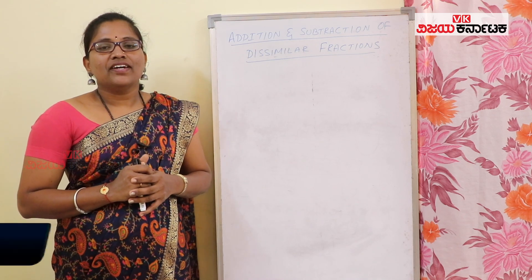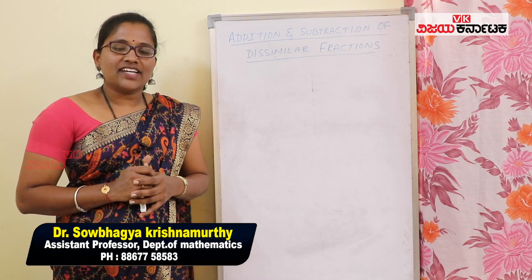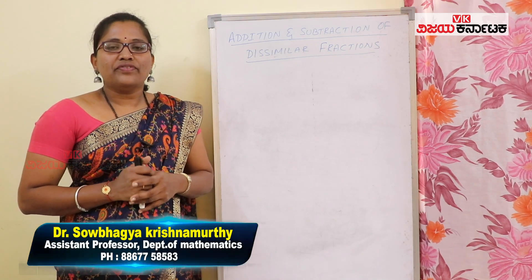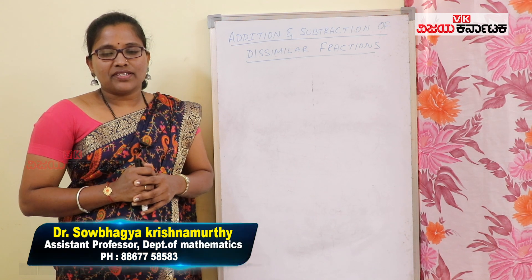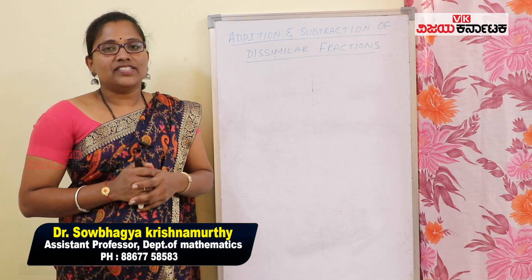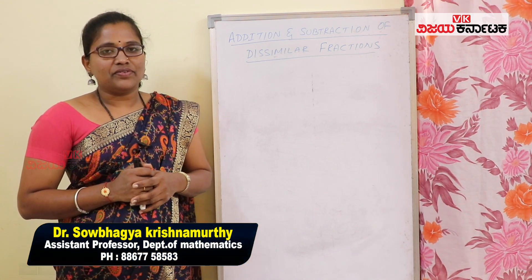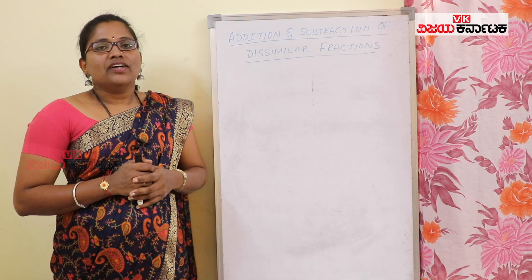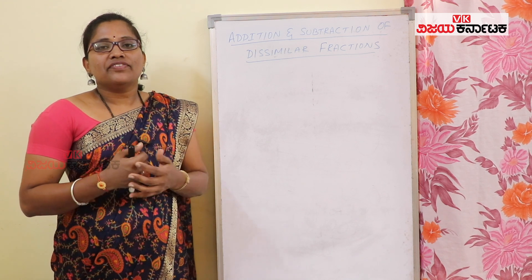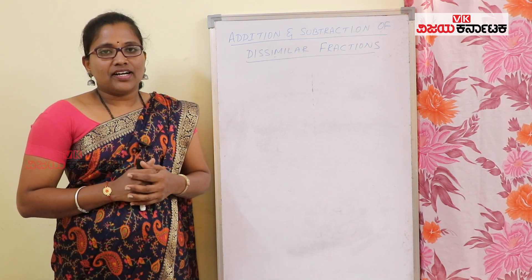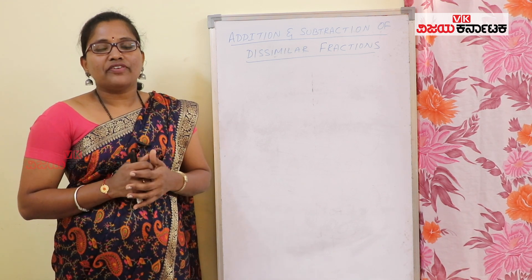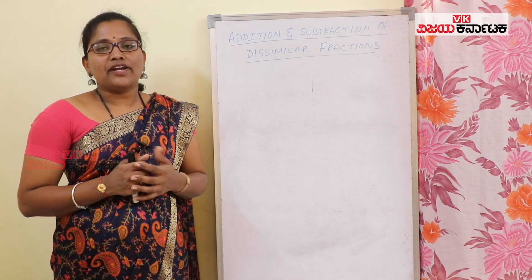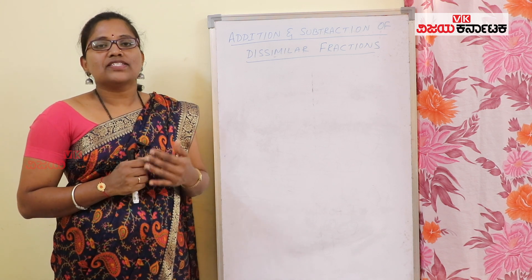My name is Karavikshakar. We will use the square of two-digit numbers and the square of three-digit numbers. Now, we will use dissimilar fractions to add or subtract.